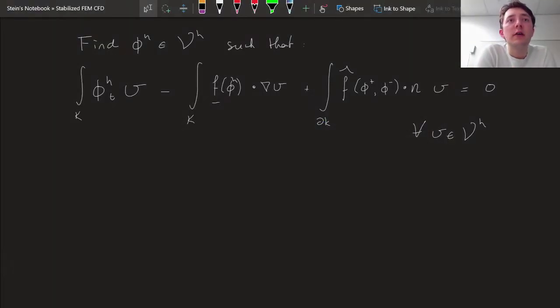So I hope that it's clear that the design of a discontinuous Galerkin method revolves around the choice of numerical flux. That was this f hat on the boundary. This was ambiguous, we have two values for phi to pick from, and we have a choice to make here.